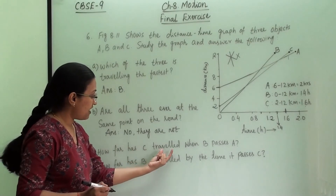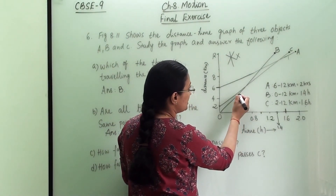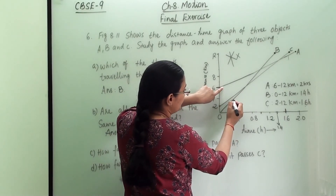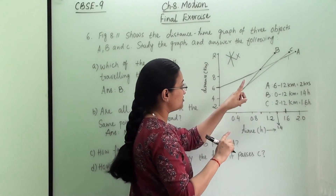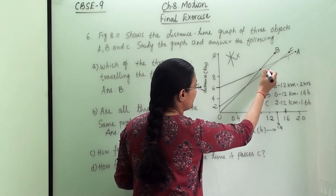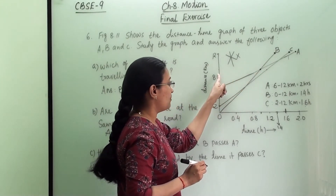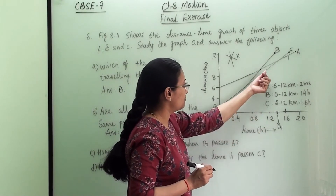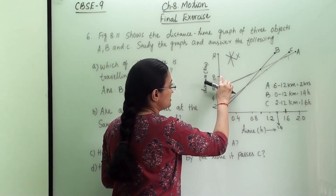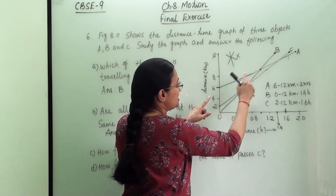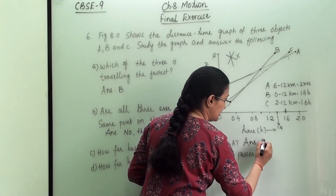The third question asks how far C has travelled when B passes A. B and A cross each other at one point on the graph. At that same moment, we locate the C line and extend it to the y-axis, which gives us 8 km. So when A and B are passing each other, object C has reached 8 km.